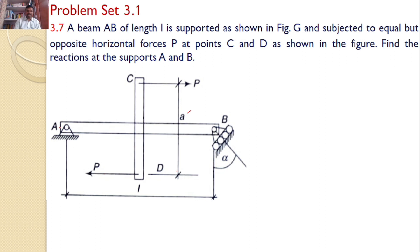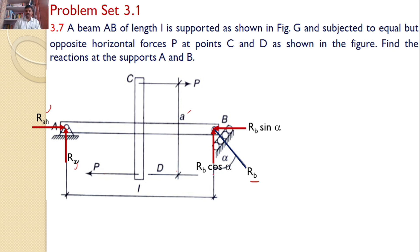Since A is a hinged support, two reactions will develop: a horizontal reaction and a vertical reaction. Since B is a roller support, only one reaction will develop, and it is perpendicular to the surface — that means it makes an angle alpha with the vertical. Let the reactions at A be RAH and RAV, and let the reaction at B be RB, which makes an angle alpha with the vertical. RB can be resolved into a horizontal component RB sin alpha and a vertical component RB cos alpha.